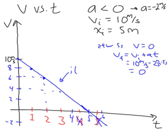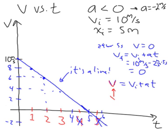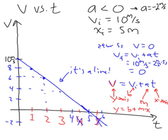Notice it's a line, and it should be — because recall that velocity equals the starting velocity plus a times t. We can equate this to y equals b plus mx, which is the equation of a line. Velocity is on the y-axis, time is on the x-axis, acceleration a is the slope, and the starting velocity is the y-intercept.